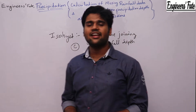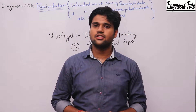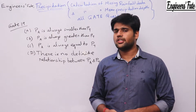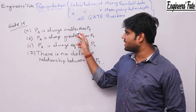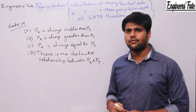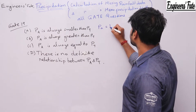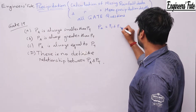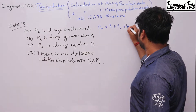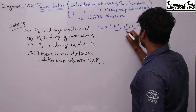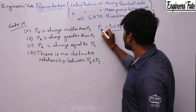Next, let's solve the gate question asked in Gate 2019. In the arithmetic mean method, P_a equals P1 plus P2 plus P3 plus so on, divided by the number of precipitation values. P_average is denoted as P_a.